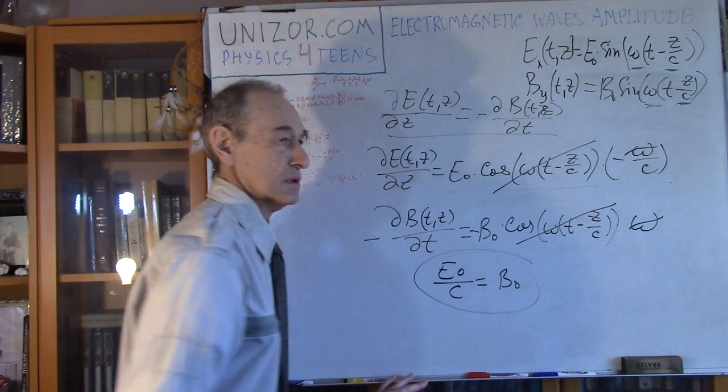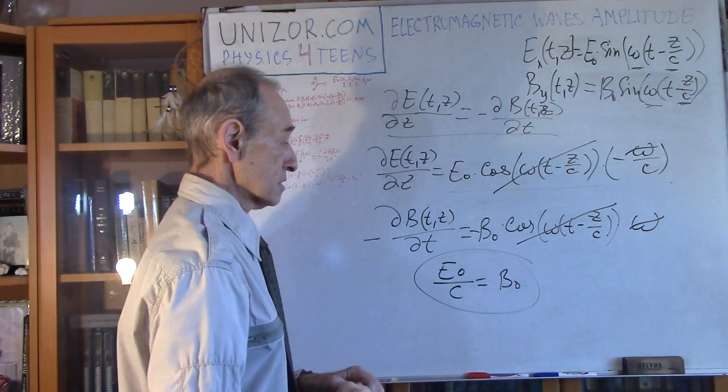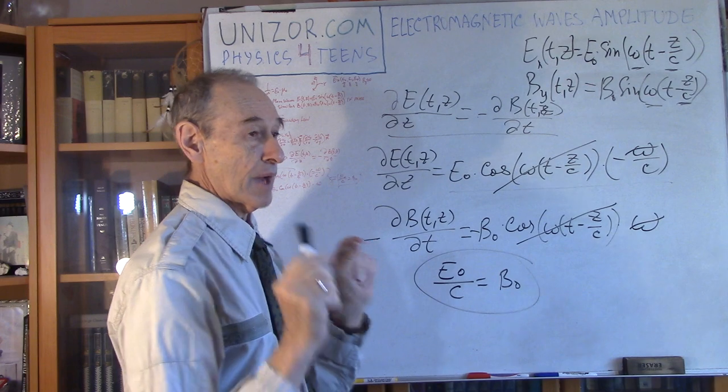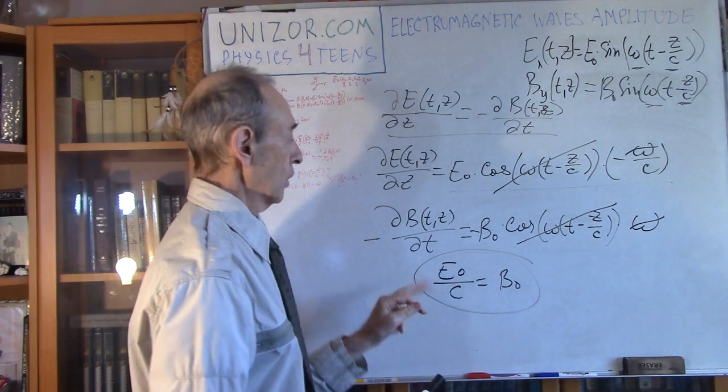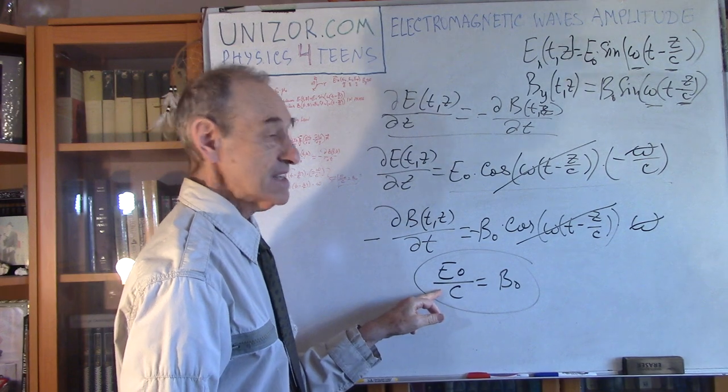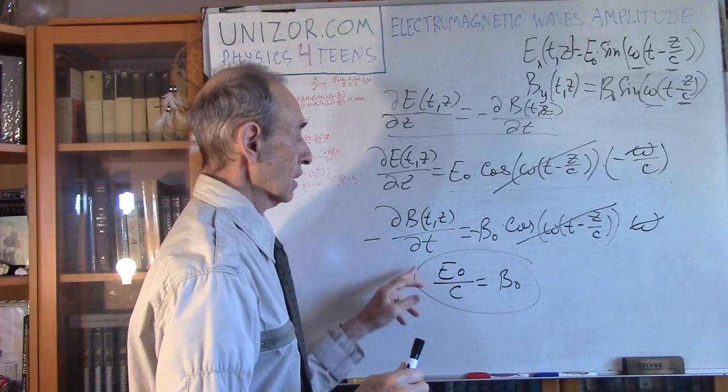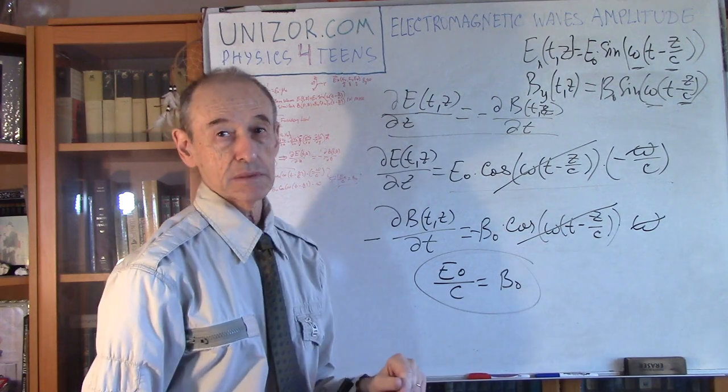This is the result which I wanted to get today. As you see, the amplitude of the electric component is by c, which is a very big number, the speed of light, greater than the magnetic component.